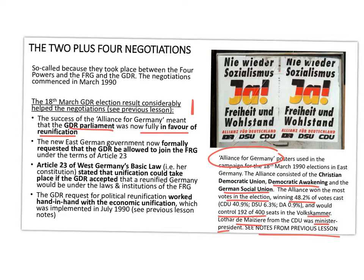As a result, the East German government formally requested that East Germany be allowed to join West Germany under the terms of Article 23 of the Basic Law. Article 23, drawn up in 1949, stated that unification could take place if East Germany accepted that a reunified Germany would be under the laws and institutions of West Germany. De Maizière invoked Article 23, accepting that a future reunified Germany would be West Germany expanding its Basic Law to encompass the East German people.